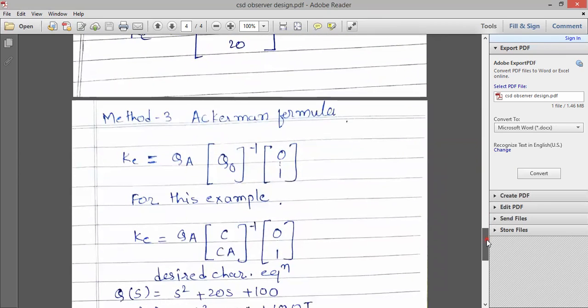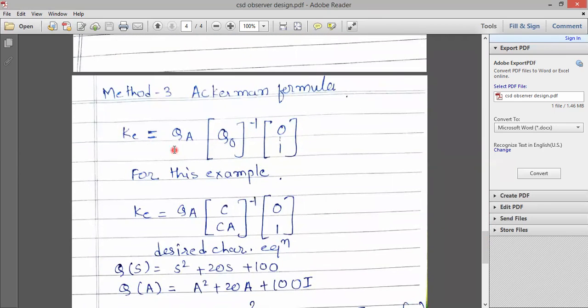And the third method is Ackerman formula. So for Ackerman formula, QA into Kalman matrix inverse into 0, 0, 1. This is the standard equation.